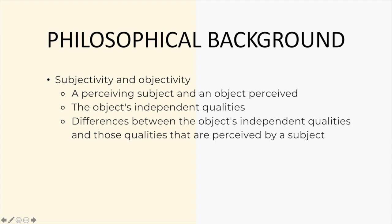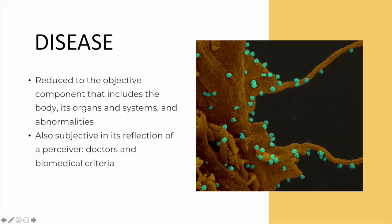This philosophical background is very important. These ideas of subjectivity and objectivity play out often in the background of terms like disease and illness. We can think about disease as suffering and discomfort that is reduced to a kind of objective component — so-called objects like the body, organs and systems of the body, various kinds of abnormalities of the body. When we use the term disease, we're really referring to this sort of objective quality of human biology, ecology, and so on.